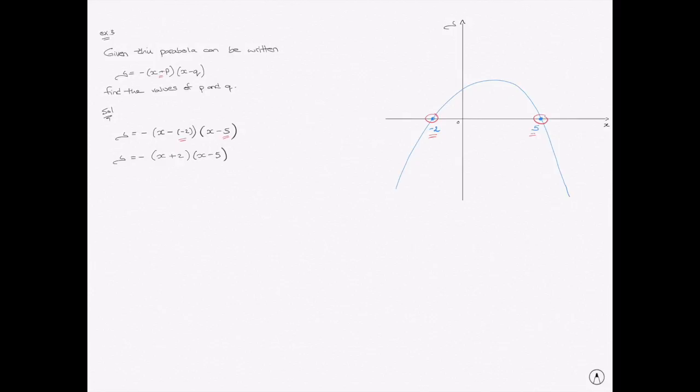And now I can see why we had a plus sign in the question. Remember, we had a plus here, and we now have a plus there. So, we can go ahead and state that p is equal to 2 and q is equal to 5. And there we go.